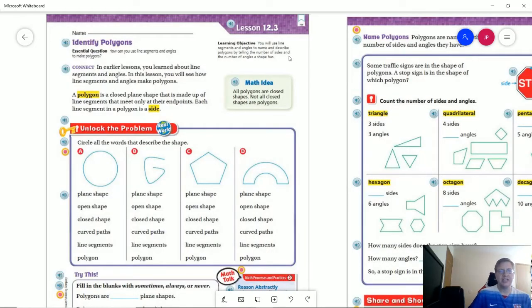So a polygon is any closed plane shape that is made up of line segments that meet only at their endpoints.